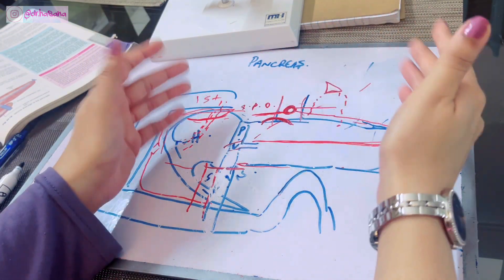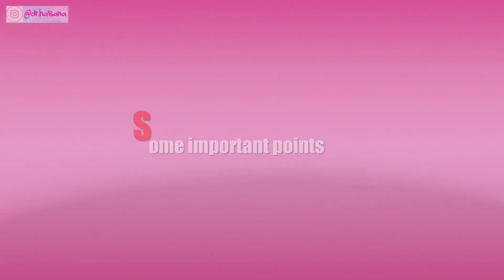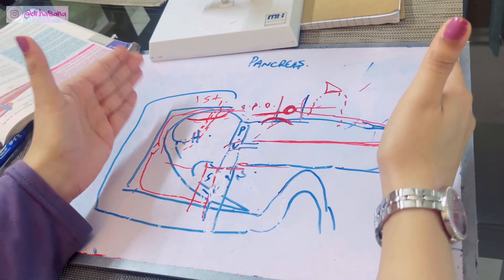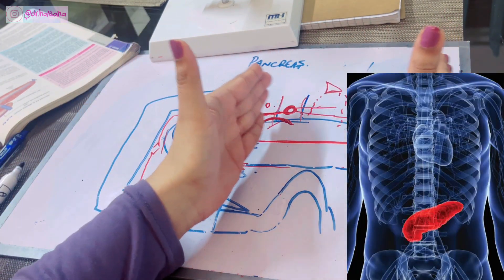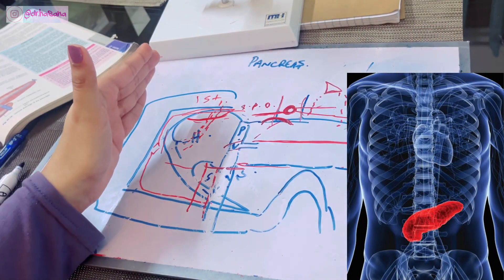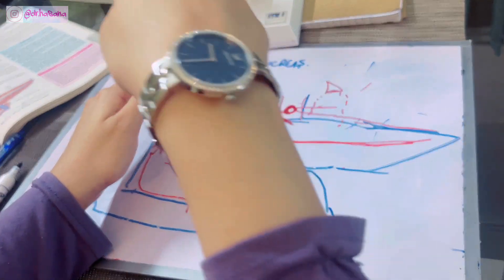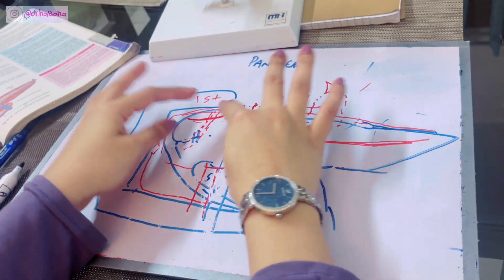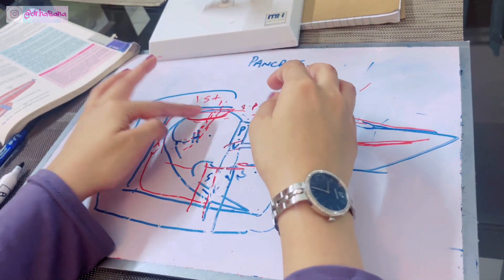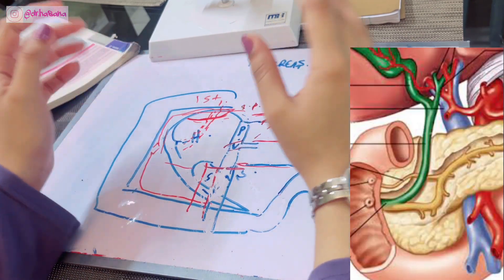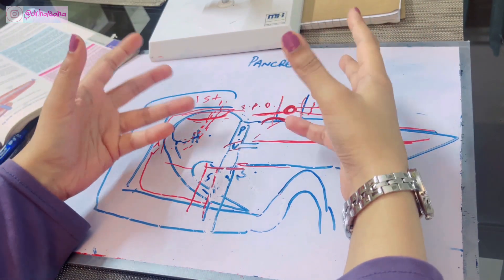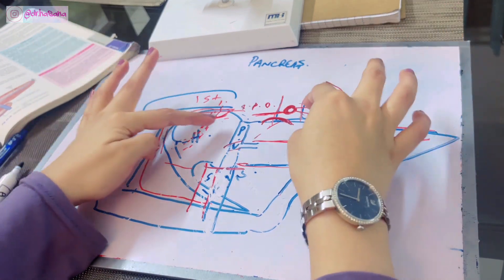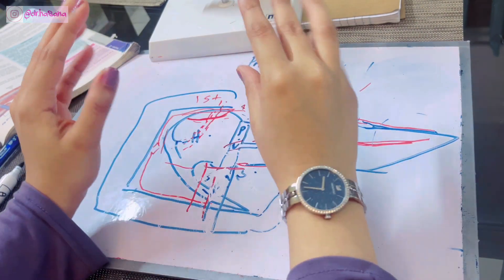The tail of the pancreas lies inside the lienorenal ligament. Clinically, in pancreatitis, pain is located in the epigastric region radiating towards the left hypochondrium and the back — epigastric pain radiating to the back is the characteristic pain of the pancreas. An enlarged pancreas can cause obstruction of the bile duct, leading to obstructive jaundice with dark urine, light-colored stool, and yellowing of the body. The most common site of pancreatic cancer is the head of the pancreas.